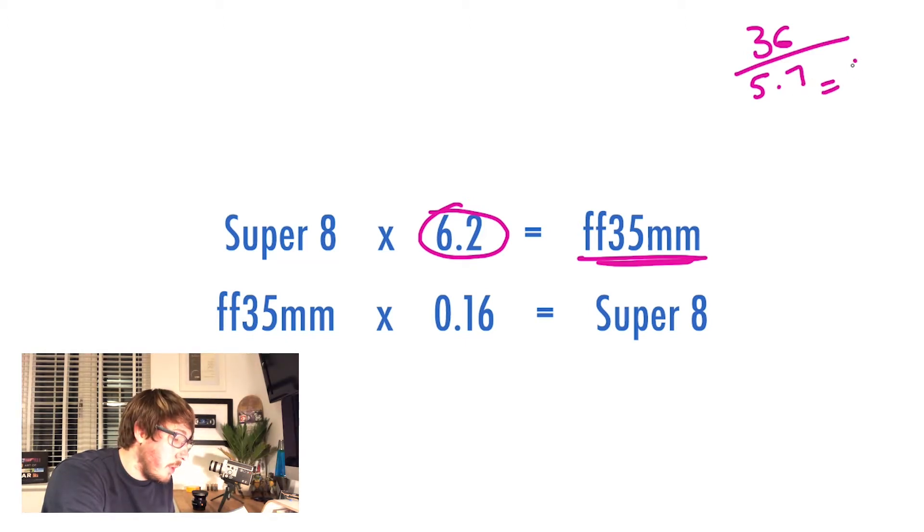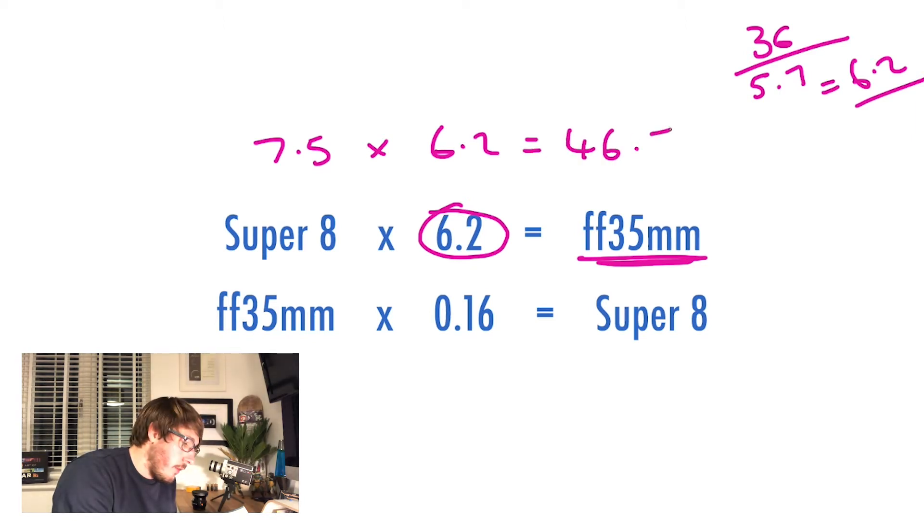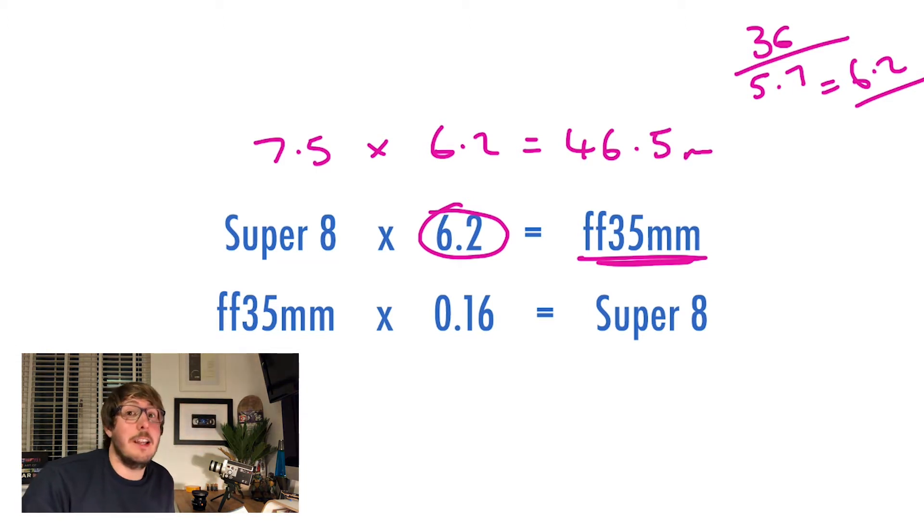What this sum alone enabled me to do was actually work out the range of lens that I've got on my Canon 814 here. To do the simple maths, if I take the widest I've got here, 7.5, times 6.2, that gives me 46.5 millimeters. That's actually not that wide. It's closer to your 50mm, which is what you do to frame up a person. I expected it actually to be a lot wider.